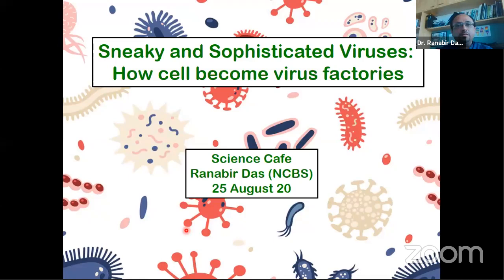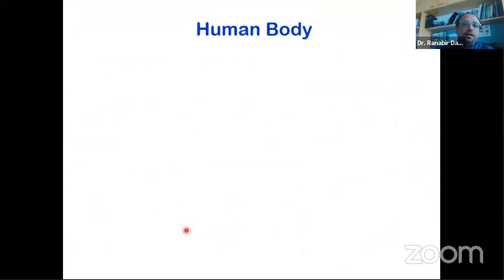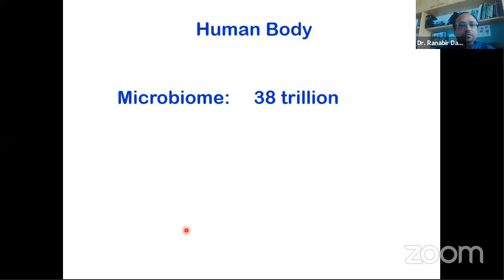Viruses are probably the most relevant topic today. How they infect human cells and replicate inside them to make multiple copies is what we'll discuss. A basic question: how many bacteria are present in the human body at any point in time? It's going to be 38 trillion — that many bacteria are present in the human body.